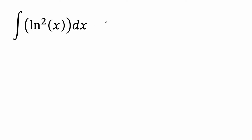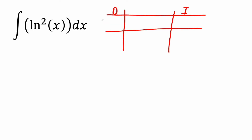I'm going to draw my table first. In my derivative column I'm putting in the whole thing: ln(x) squared. This alternates between positive and negative, and in my integral column I'm putting in 1, and the integral of 1 is x.